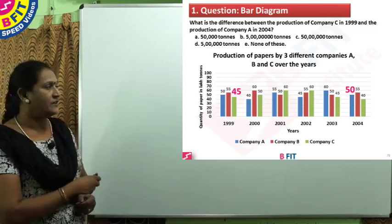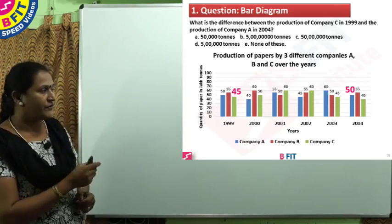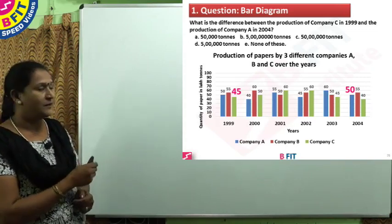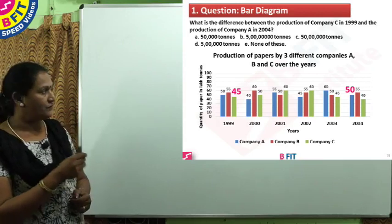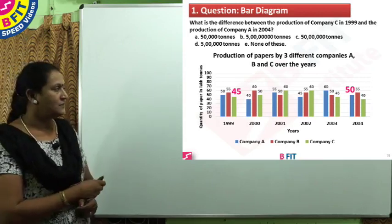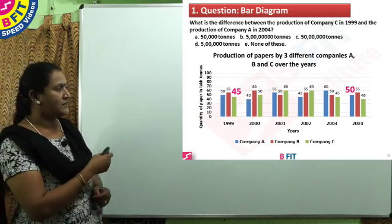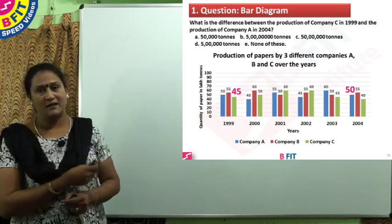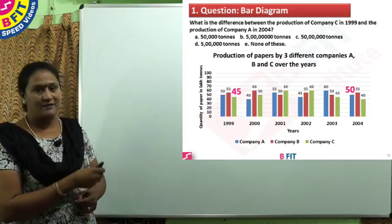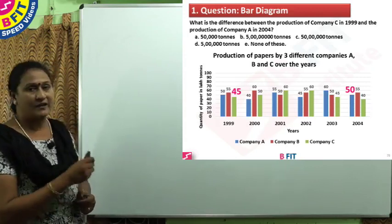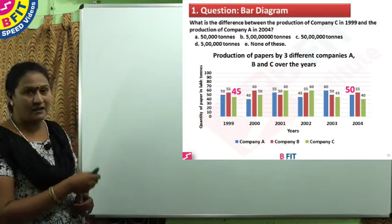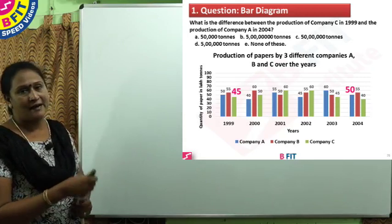To confirm: for Company A in 2004, it is 50 lakh tons, and for Company C in 1999, it is 45 lakh tons. The difference is 5 lakh tons, so the answer is option B, 5 lakh tons.